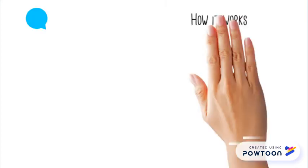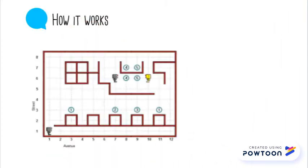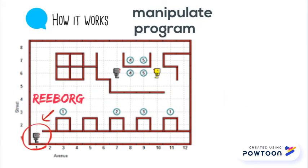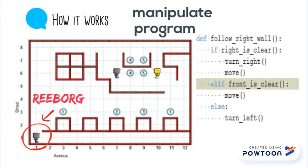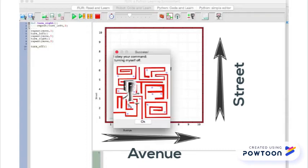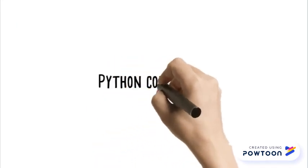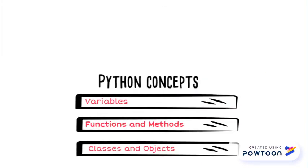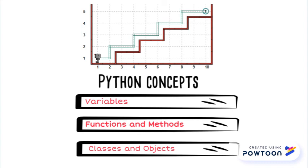In an artificial world, students can manipulate and program a robot named ReapWorg to perform various tasks using Python syntax. The robot will move based on students' commands through a city consisting of a rectangular grid of streets and avenues. Students can use Python concepts such as variables, functions and methods, classes and objects to control the movement of ReapWorg.